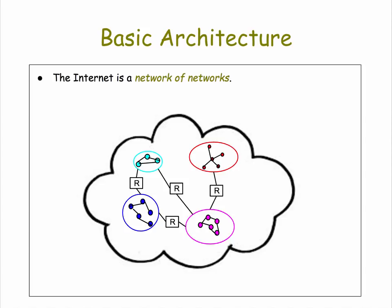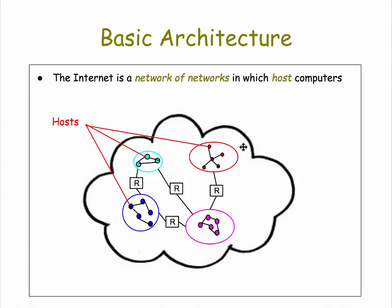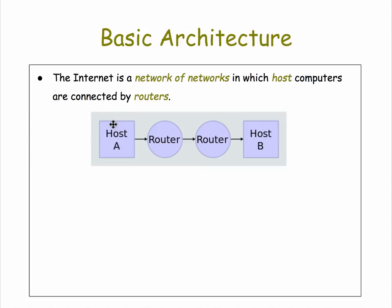How is the Internet connected together? The Internet is really a network of disparate networks, signified here by the different colored local networks. The different colored dots are the host computers on the network, and they're connected by routers, which are special-purpose computers that deliver messages through the Internet.